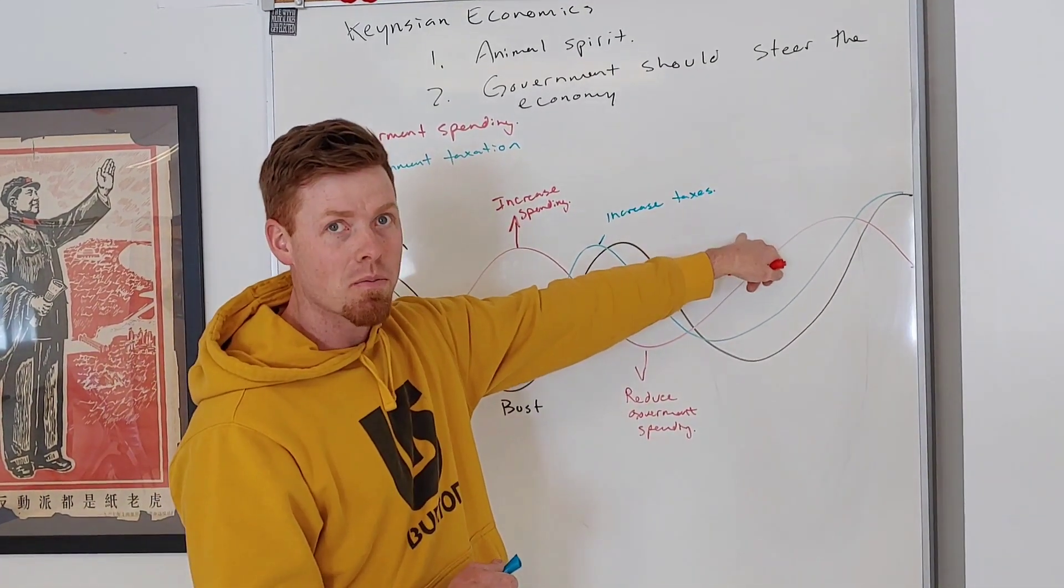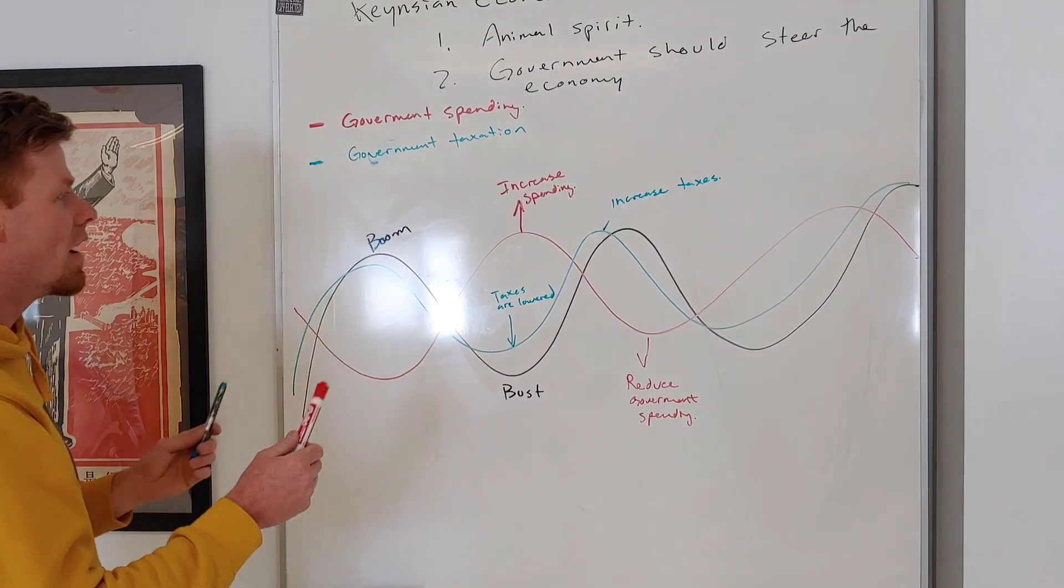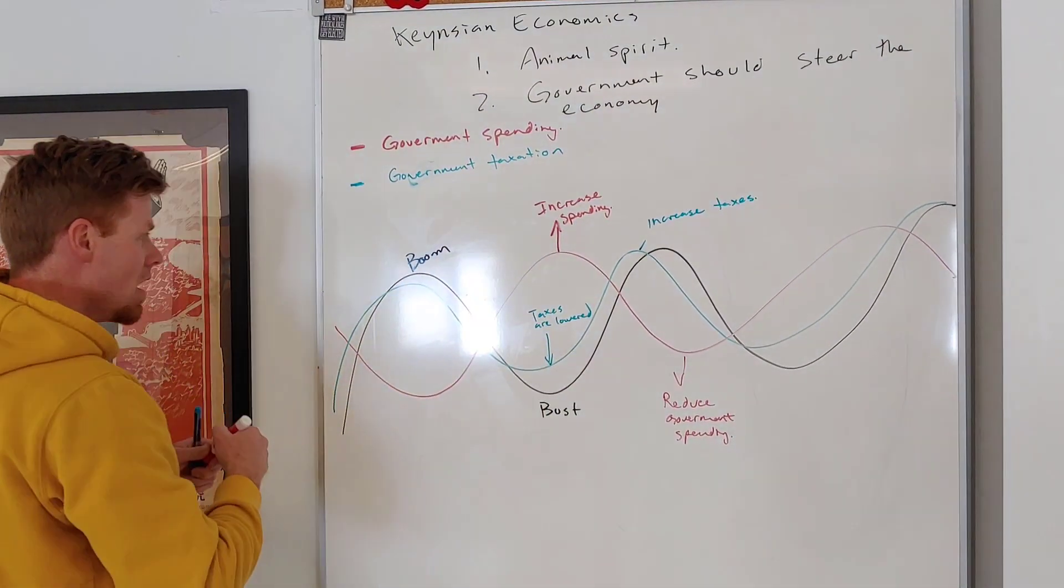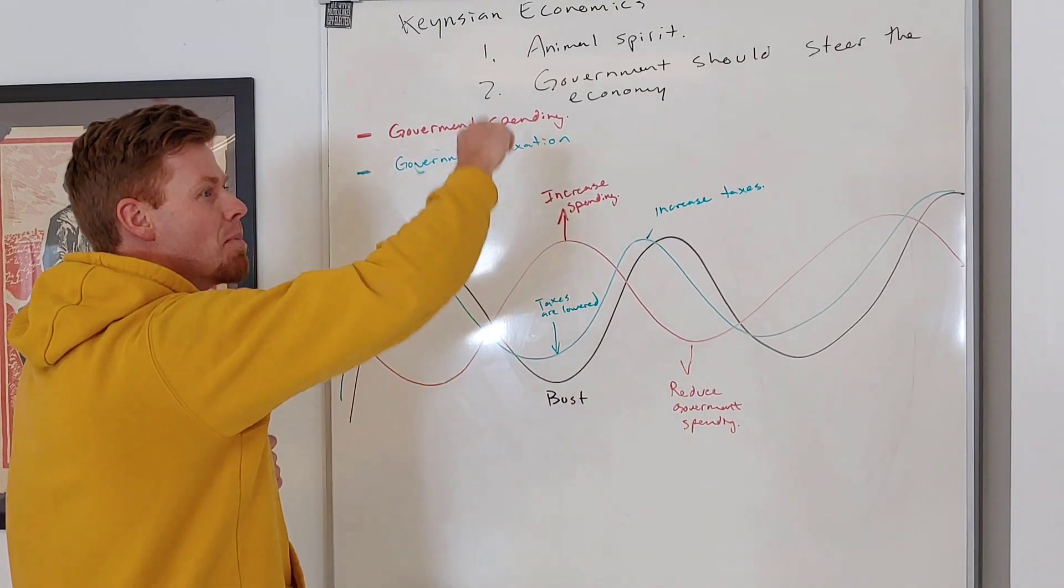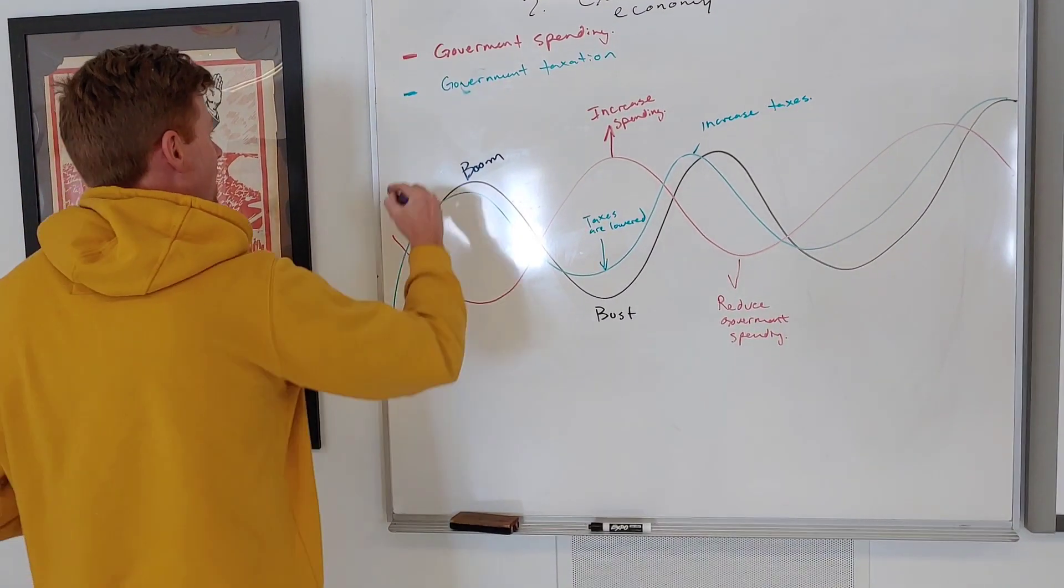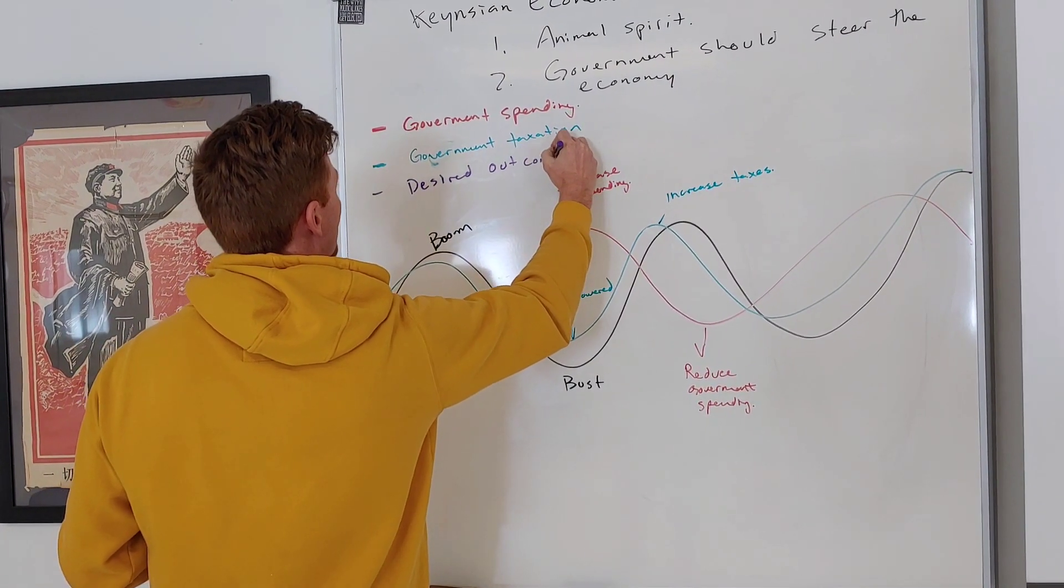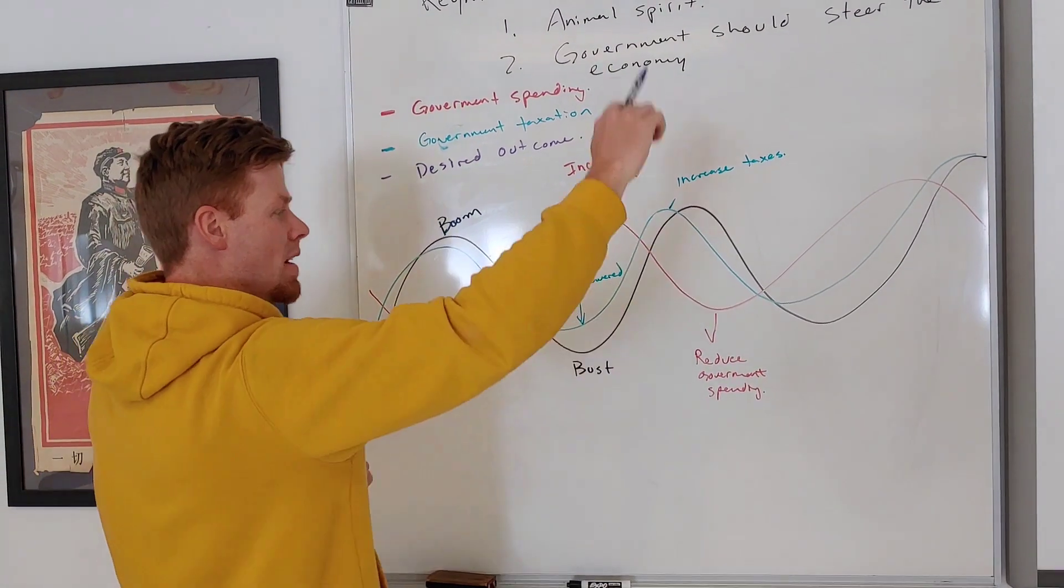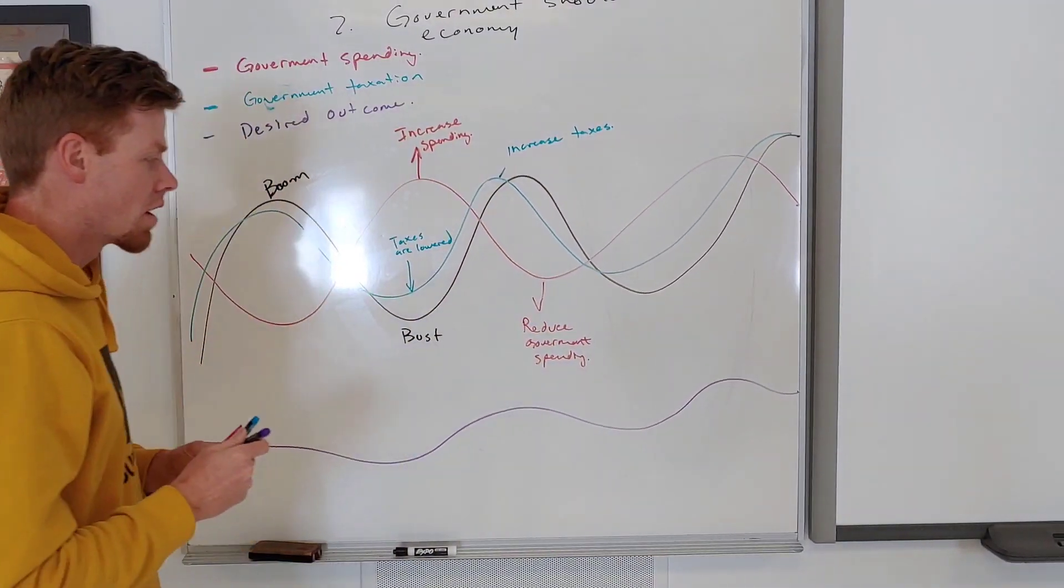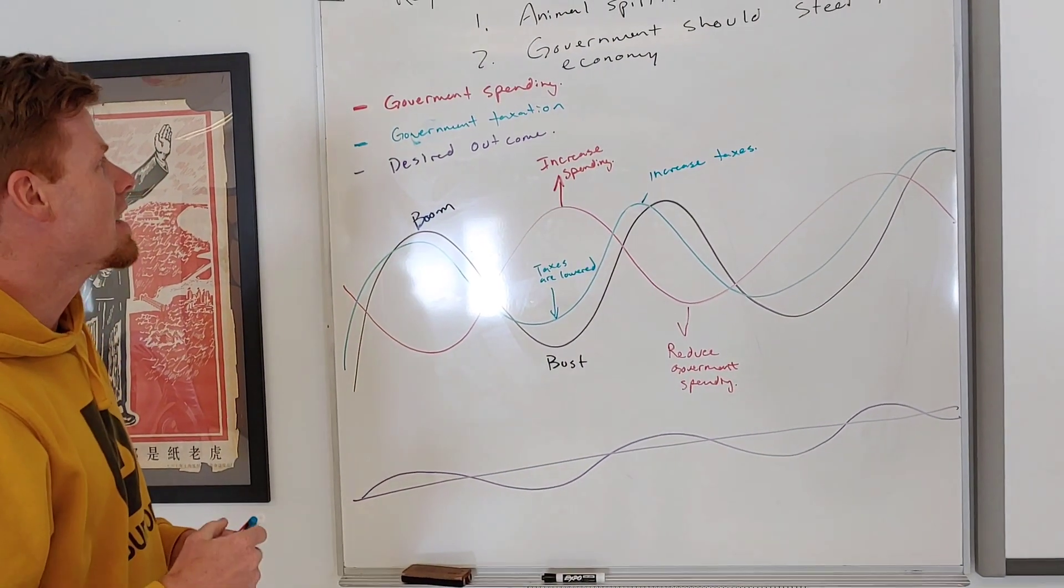What this will do by increasing taxes when times are good is help to repay off the money that the government spent when times were bad. The idea here is that the government is okay when times are bad going into debt because they know that that debt's going to be paid off by increasing taxes when things are good. So what will inevitably happen, instead of having an economy that goes up and down, it will look more like a gradual economy that rises and falls but generally goes in an upwards direction. That's the basic idea of Keynesian economics.